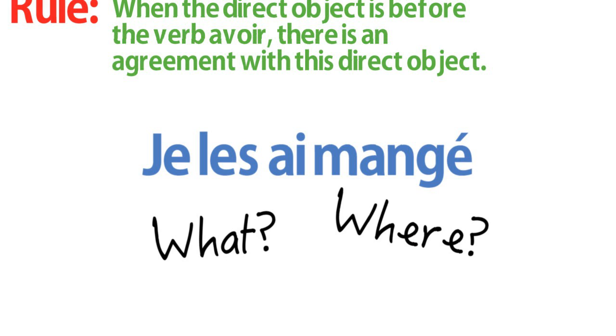Well, it's obvious. It is before the verb avoir. So, the rule is that there is an agreement between les and mangé, the past participle. For example...